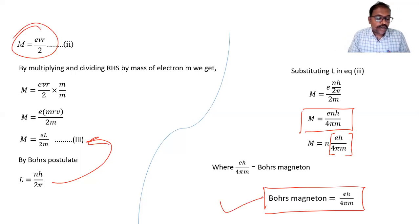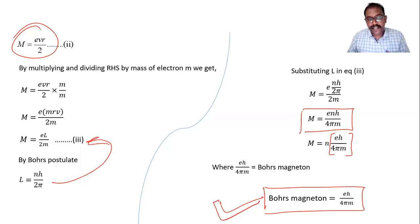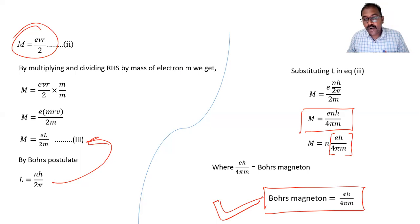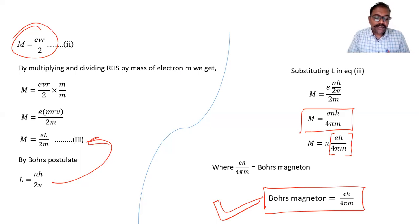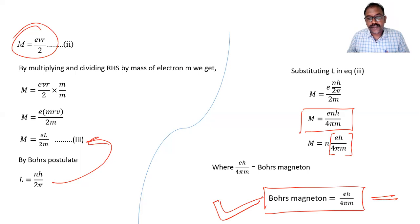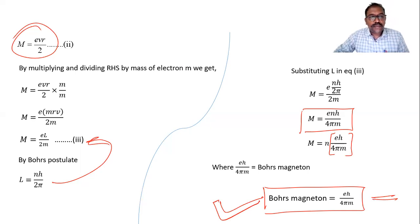So after deriving everything up to this point, you can directly write down the Bohr's magneton formula. This is Bohr's magneton, and I hope you understood this derivation.